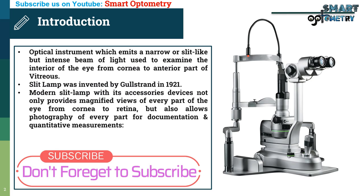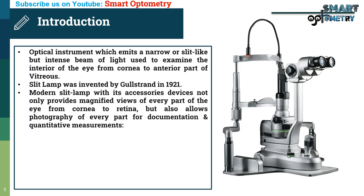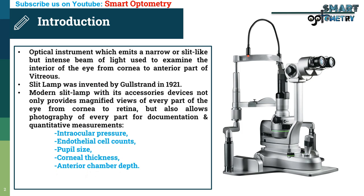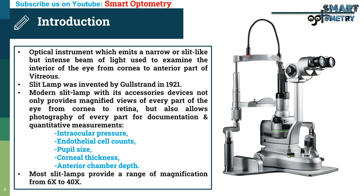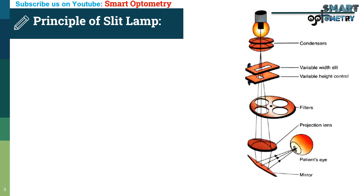Modern slit lamps with their accessory devices not only provide magnified views of every part of the eye from cornea to retina, but also allow photography of every part for documentation and quantitative measurements like intraocular pressure, endothelial cell counts, pupil size, corneal thickness, and anterior chamber depth. Most slit lamps provide a range of magnification from 6x to 40x.